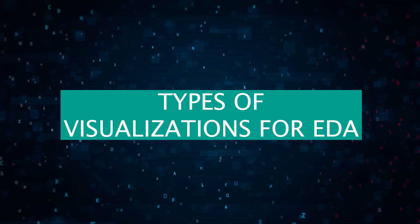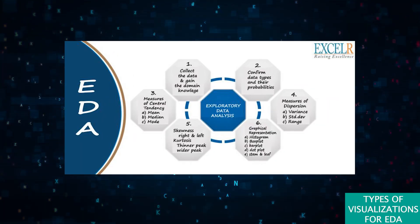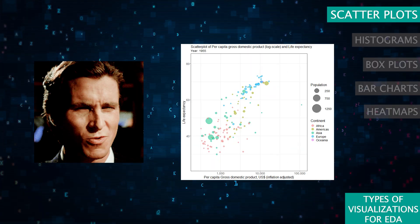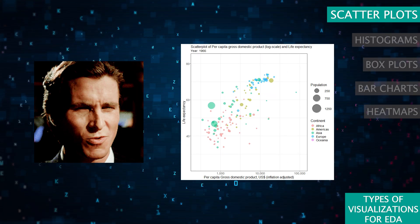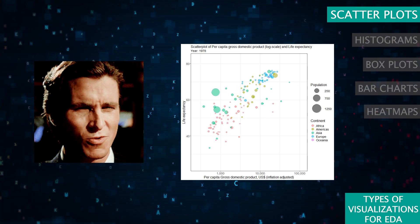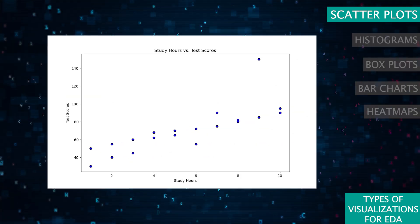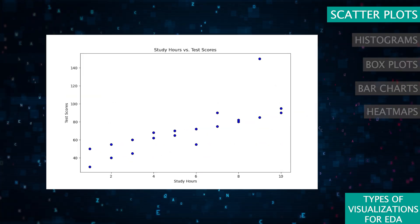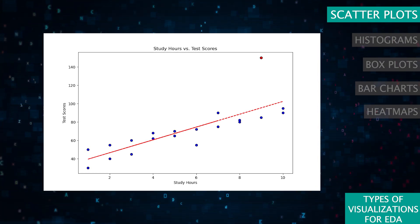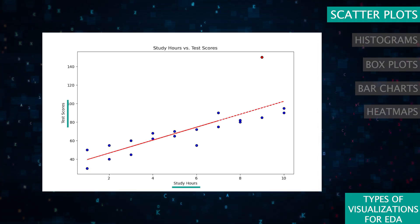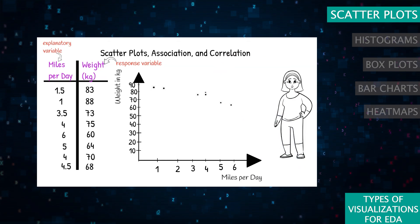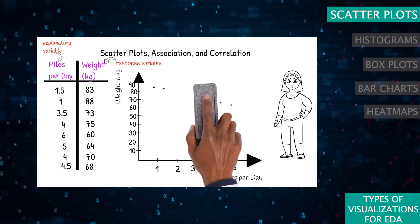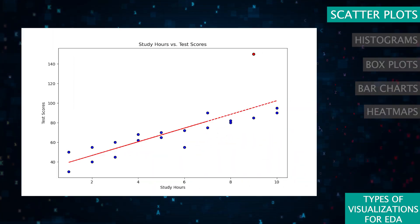Let's explore some of the key types of visualizations you should have in your EDA toolkit. Scatter plots are fantastic for examining relationships between two continuous variables. For example, if you're analyzing the relationship between study hours and test scores, a scatter plot can help you see if more study time correlates with higher scores. It's a great tool for easily determining if there are outliers in data. Just draw a trend line. In this example, you see one outlier marked as a red dot.